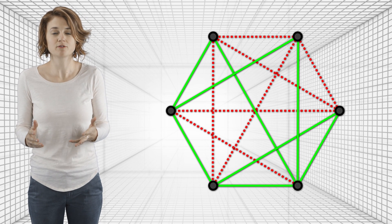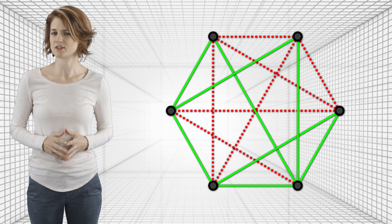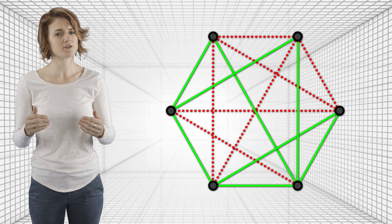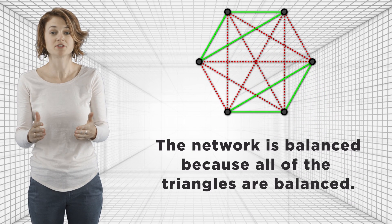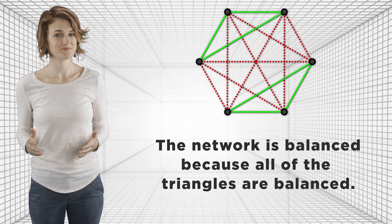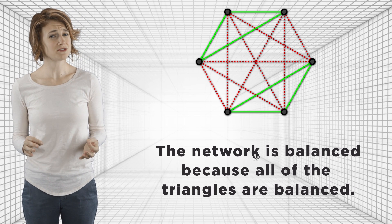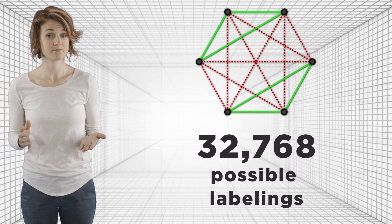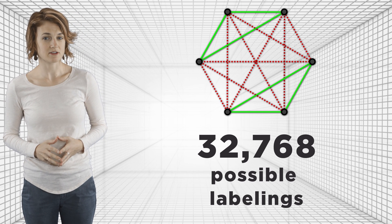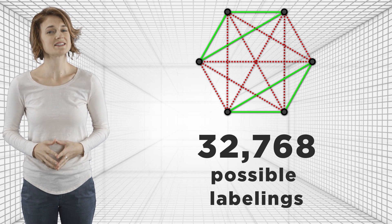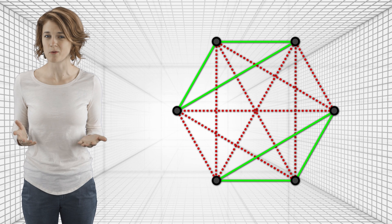There are other ways we could have chosen to extend the definition of structural balance to bigger networks, and each definition would have different consequences and applications. But for now, we'll stick with the very local definition of balance. The network is balanced because all of its triangles are balanced. There are many different ways to color the edges of this graph, green or red—32,768, to be exact. Some of those labelings are balanced, and some are not. Given a specific coloring—an assignment of friends or foes—we can simply look at each of its triangles, check whether they're balanced, and conclude whether or not the entire network is balanced.